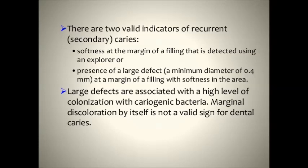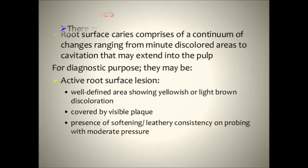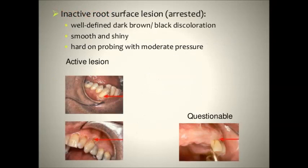Large defects are associated with a high level of colonization with cariogenic bacteria. For root caries, for diagnostic purposes there may be an active root surface lesion or an inactive root surface lesion. Active root surface lesions are well defined, showing yellowish or light brown discoloration covered by visible plaque, and there is softening and leathery consistency on probing with moderate pressure. For arrested root surface lesions, there is well-defined dark brown or black discoloration, a smooth and shiny surface, and hardness on probing with moderate pressure.